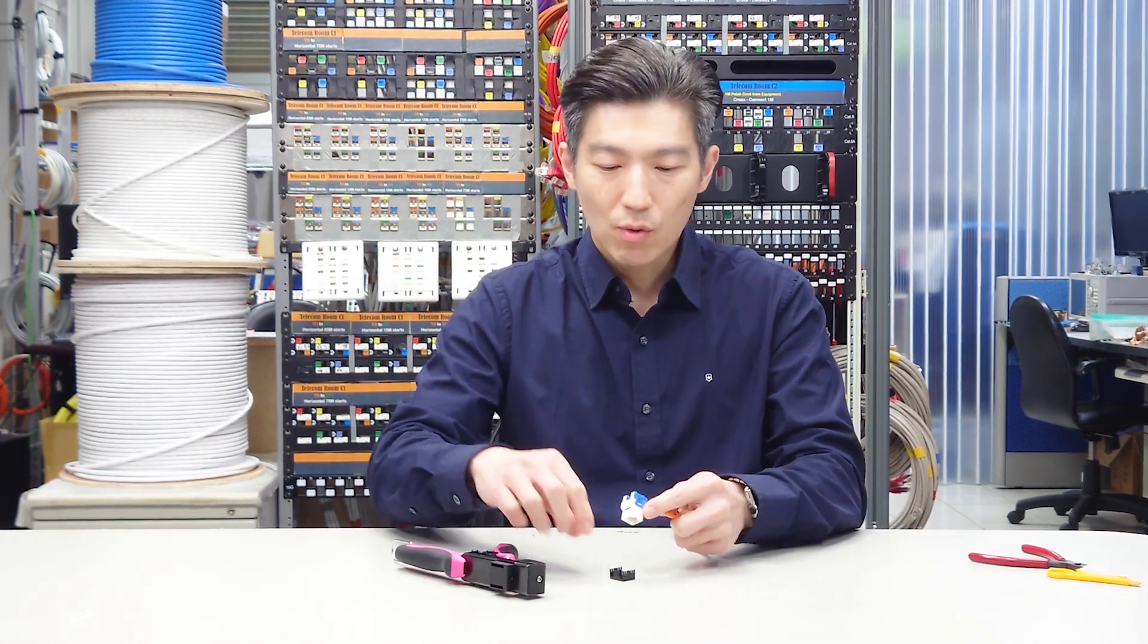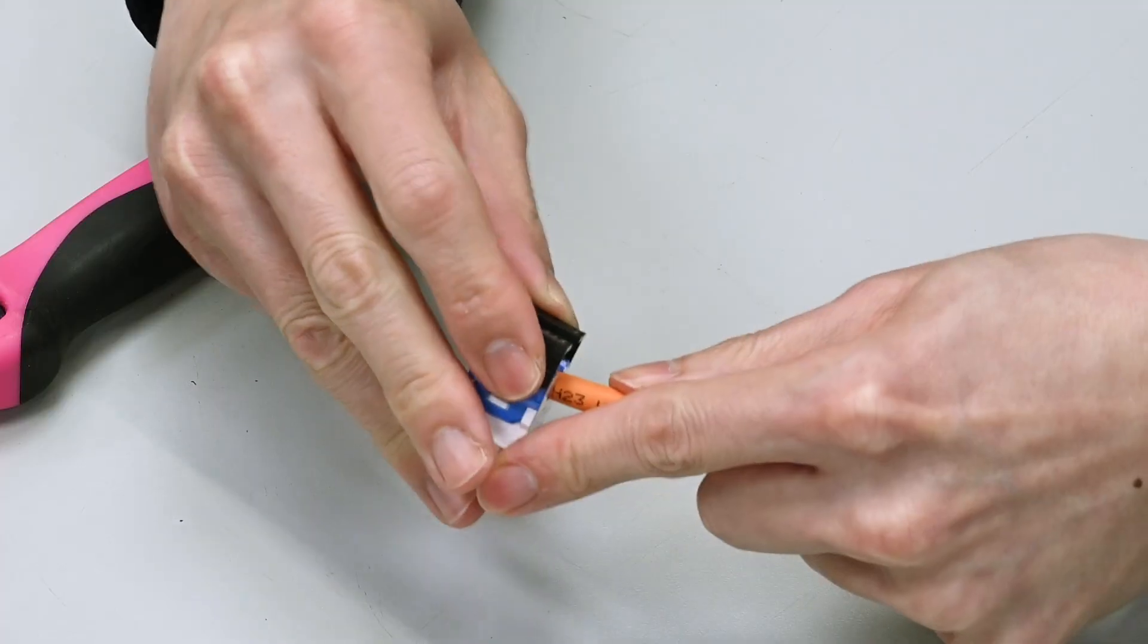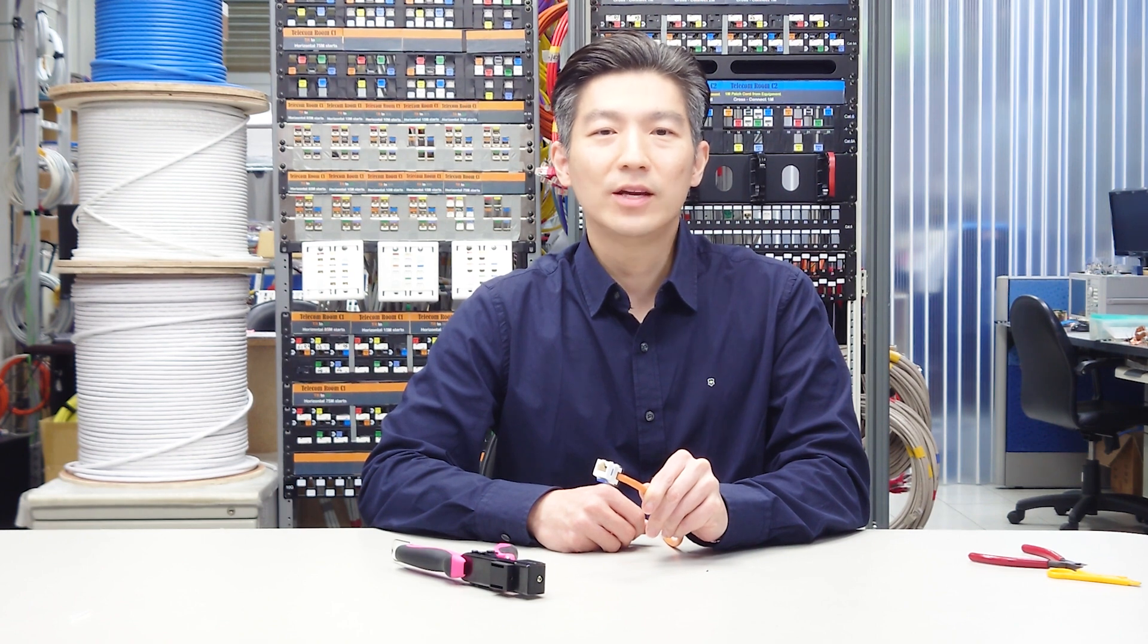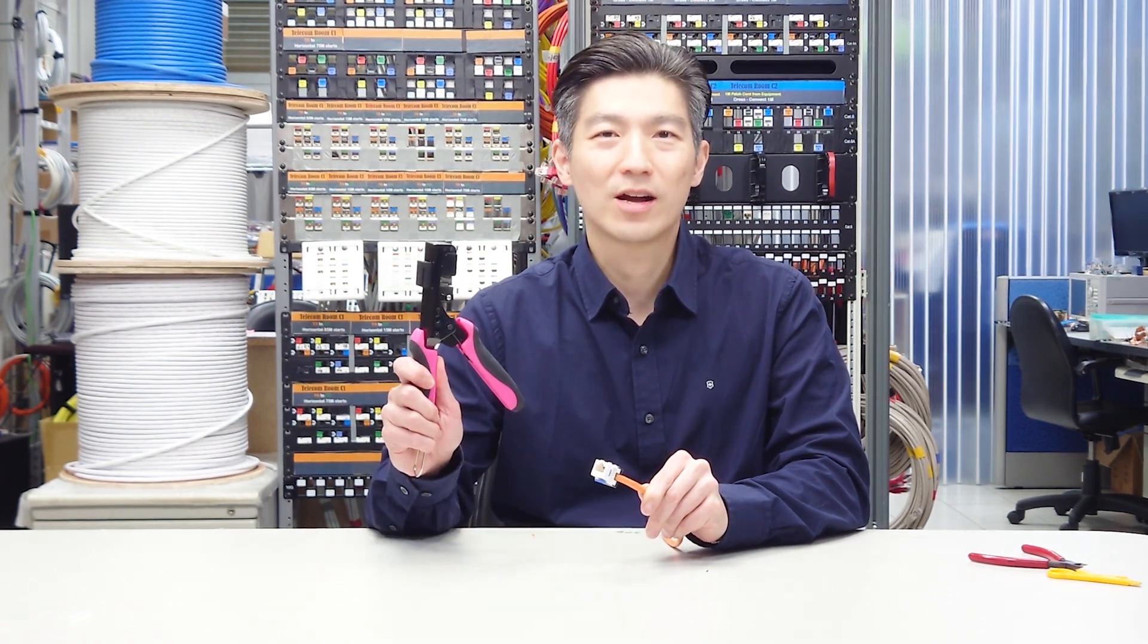It only takes about one minute to complete the termination. And if you prefer the traditional punch down tool, the IDC accepts both chrome and 110 punch down tool. You can choose either tool for termination. Still, I strongly recommend you to give the EZ termination tool a try.